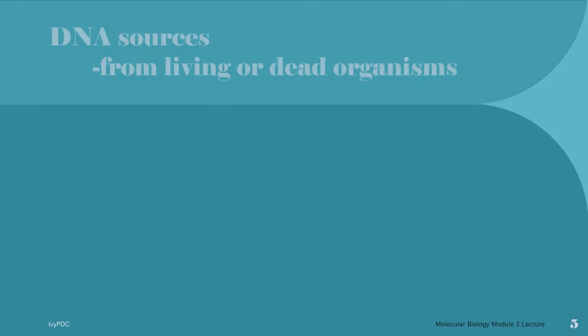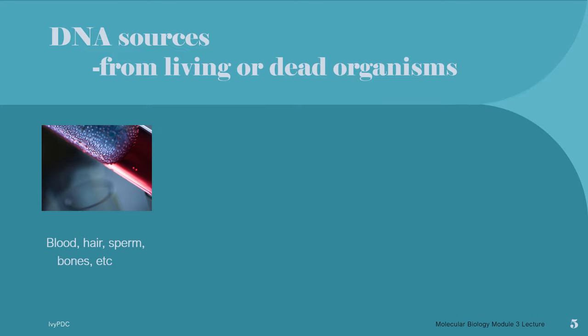So where do we get DNA? Where does it come from? The sources for DNA isolation are very diverse. Basically, it can be isolated from any living or dead organism. Common sources for DNA isolation may include human specimens like blood, hair, semen, saliva, epithelial cells, and so on.